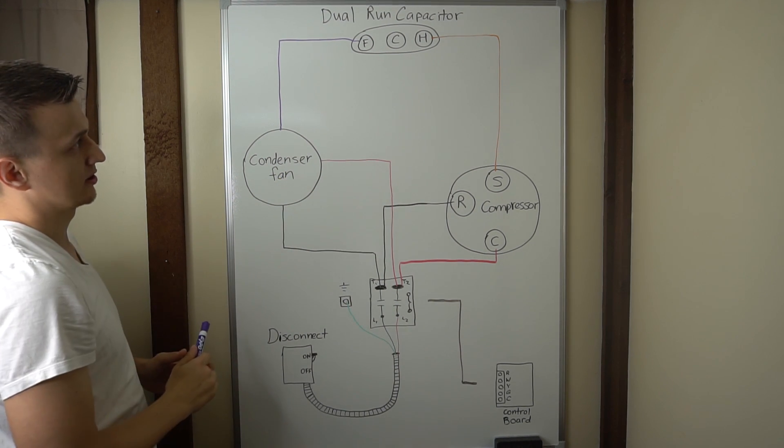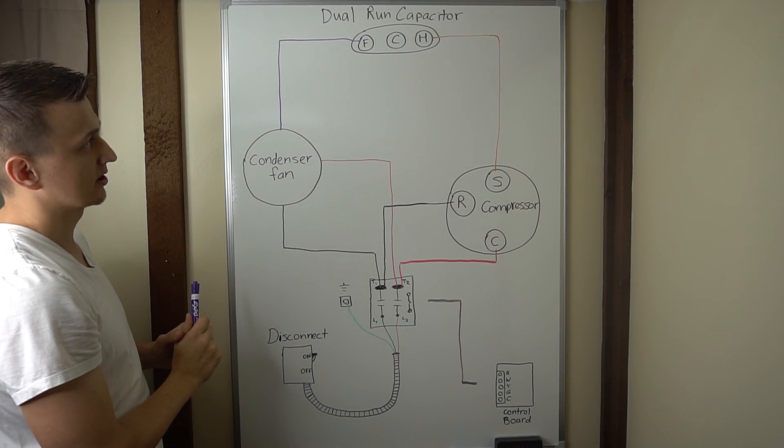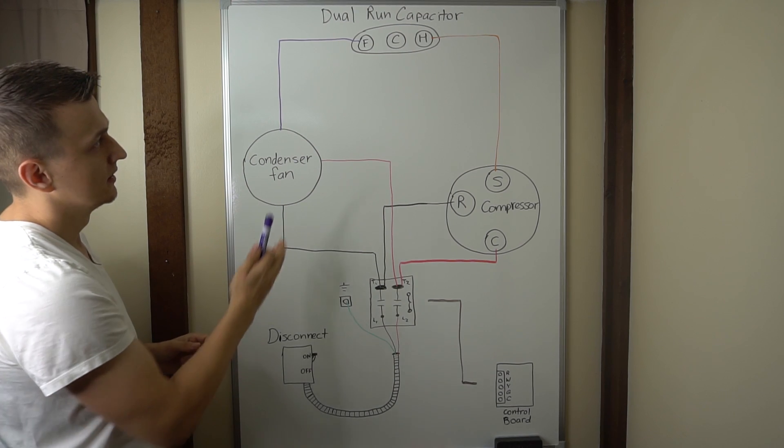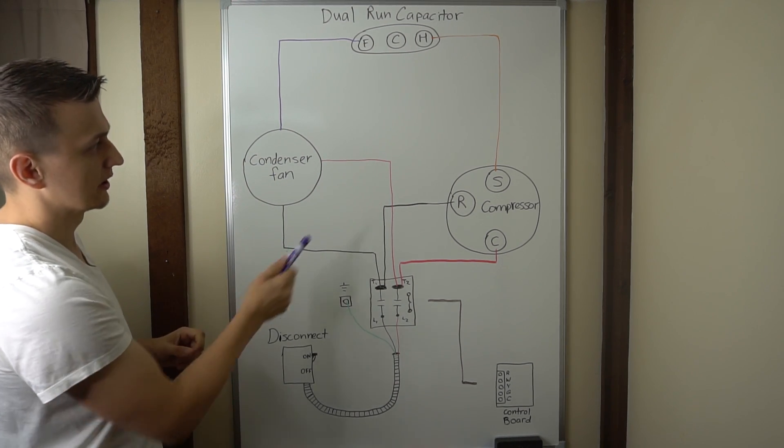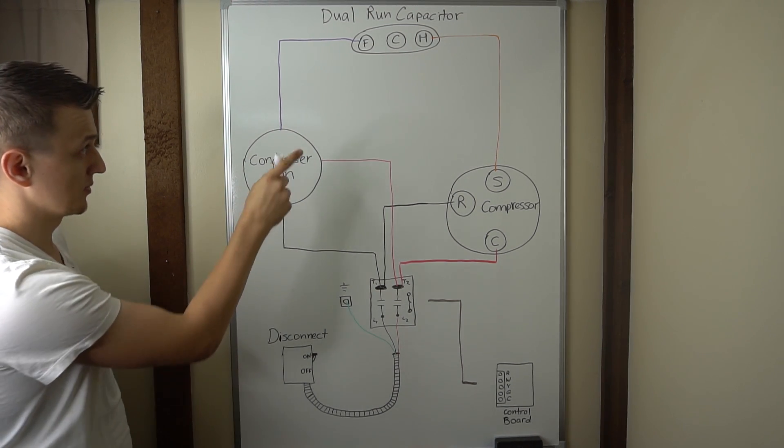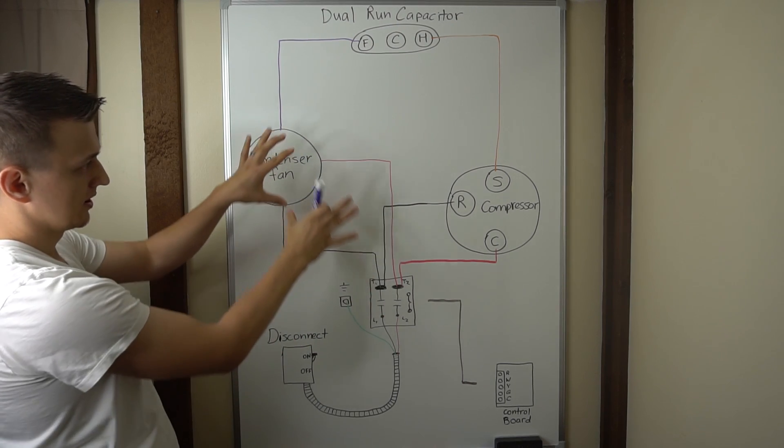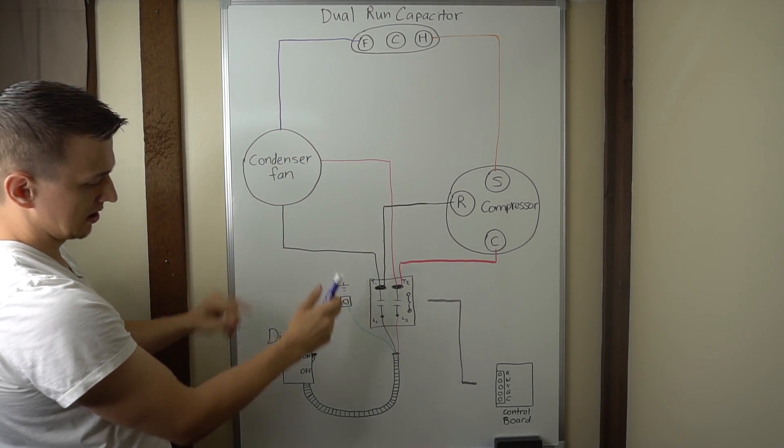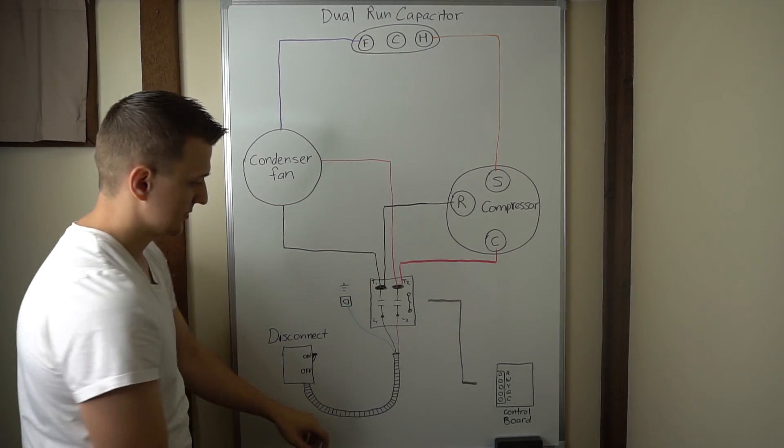We have the 240 volt side all hooked up. And this is without a start capacitor. Actually, we can add a start capacitor, a hard start kit, or a start capacitor with a potential relay just to show you how that would look like. But before we do that, let's finish this up. We got our 240 volt circuit all hooked up.